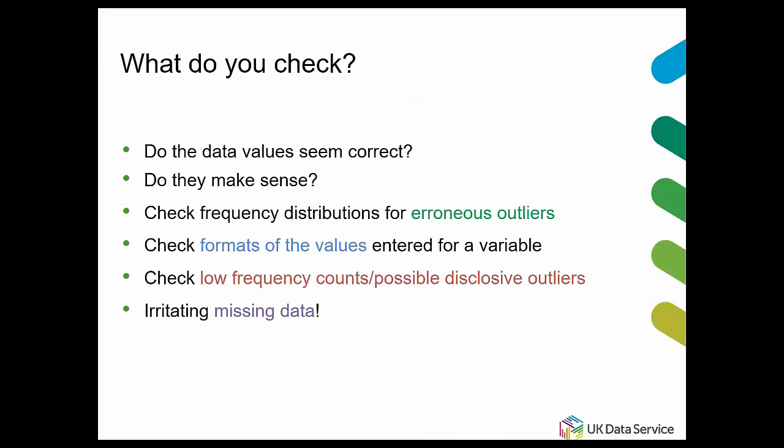So what are we checking? We're checking to make sure the values are correct — do they make sense? We're looking for erroneous outliers, very low frequency counts, or possibly disclosive outliers like very high income. We're checking the formats of values entered. And then the challenge of missing data — nobody in the data world likes missing data, particularly when it's not defined. We'll also be checking for that.